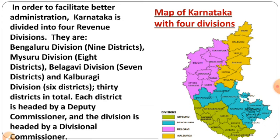Every district is in charge of a Deputy Commissioner, or DC. DC will be in charge of the particular district. Every division is headed by a Divisional Commissioner, who is in charge of the particular division. For example, Vijayapur comes under Belagavi division, which is headed by the Divisional Commissioner. In Belagavi division, seven districts work under the DCs of those seven districts, and all DCs work under the Divisional Commissioner. The Divisional Commissioner maintains a particular division, while the Deputy Commissioner maintains a particular district.